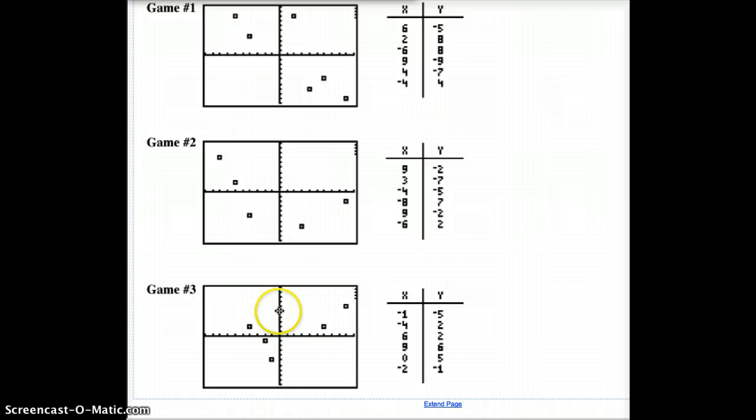Alright, so you're going to come up with probably a grand total of nine equations. You're going to graph these and you're going to put them on your graph paper. You're going to draw the lines and you're going to label the lines with the equations that go with those.